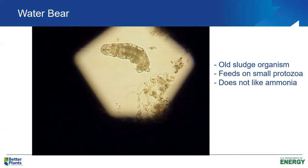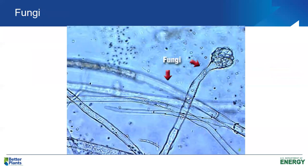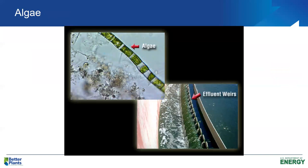Water bears feed on small protozoa and do not like ammonia — ammonia is very toxic to the water bear. Fungi are not important to activated sludge, though if present, they usually indicate issues — normally fungi will be a problem if pH drops too low in the mixed liquor. Algae are not important in activated sludge but can create problems by growing on effluent weirs and forming biological slime on secondary clarifier effluent weirs, requiring regular cleaning.